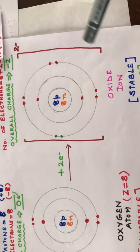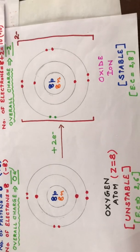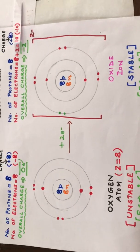This is how we show the formation of oxide ion from oxygen atom by gaining of two electrons, and it has now become a stable ion.